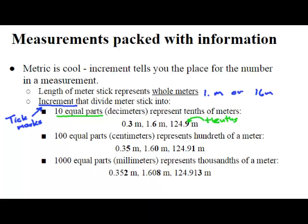If we move on and have 100 equal parts, also known as centimeters, then we get to add one more digit of information, and our measurement becomes more precise. The hundredths place follows the tenths. So we get 0.35 meters, or 1.60 meters, or 124.91 meters.